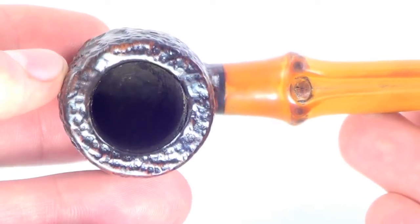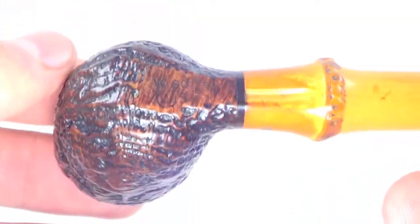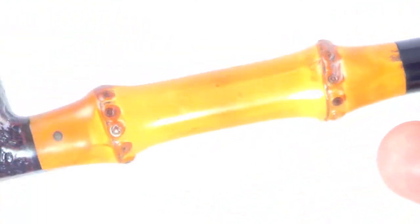Rim is char-free, bowl walls are nice and thick. There's that bamboo shank.